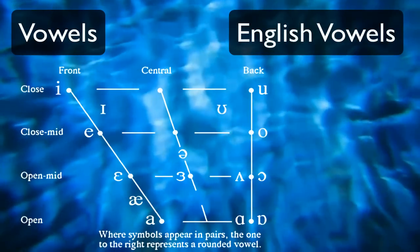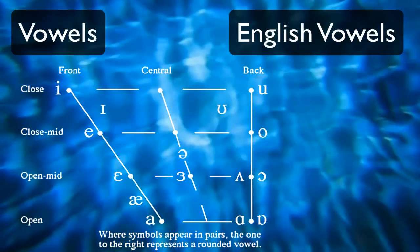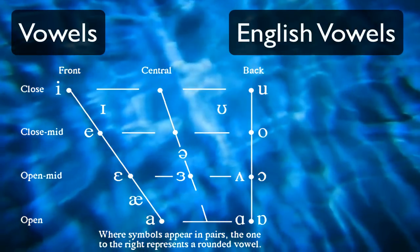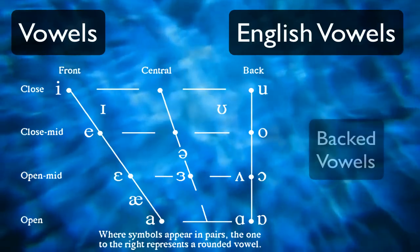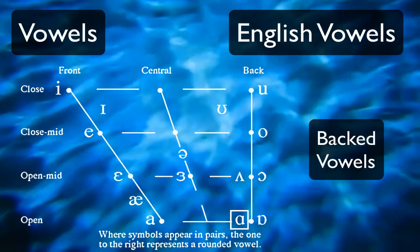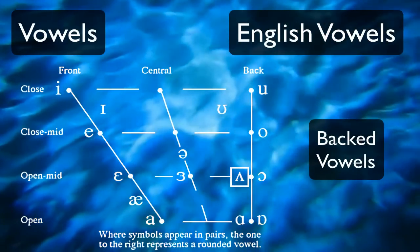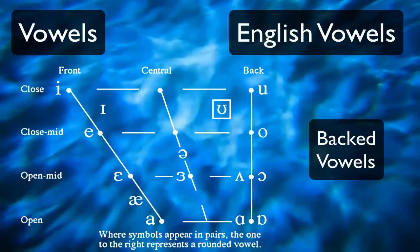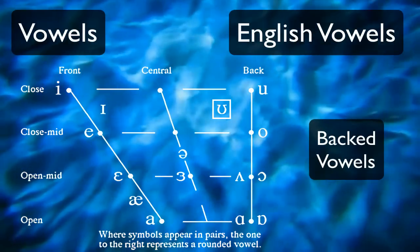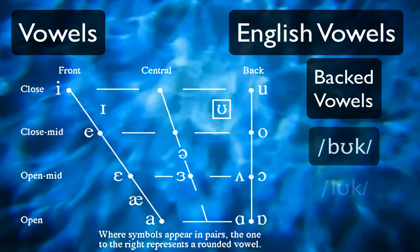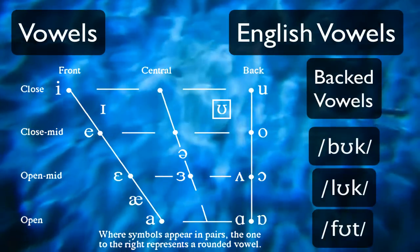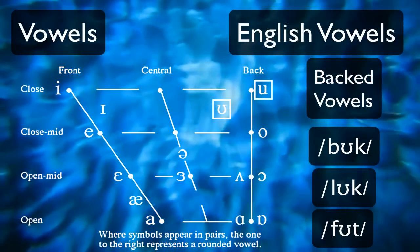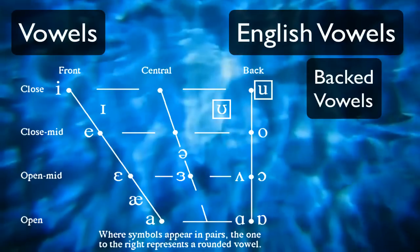These are the vowels in the English dialects we're discussing. You'll notice that height is arranged up and down, and backness left and right. Rounded vowels are written on the right and unrounded on the left. The backed vowels in most English dialects are A as in father, A as in but, U as in put, and U as in food. U takes some practice to isolate because it never occurs alone in English — there's always a consonant after it, like in book, look, or foot. It's written a bit to the left on the chart because it's not as far back as U.